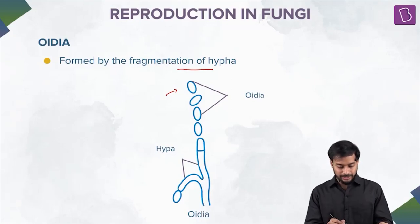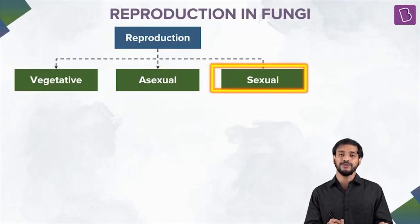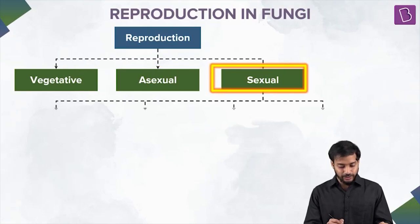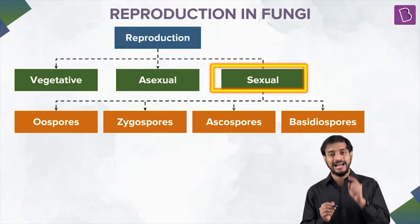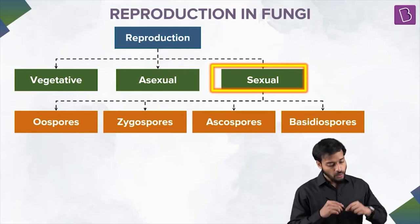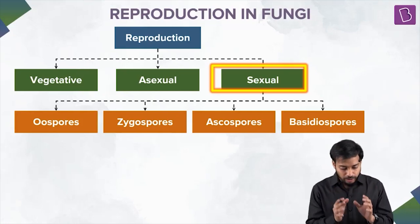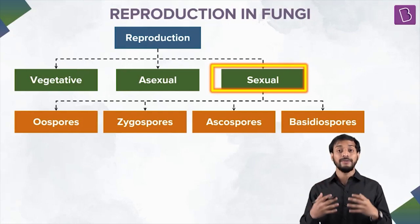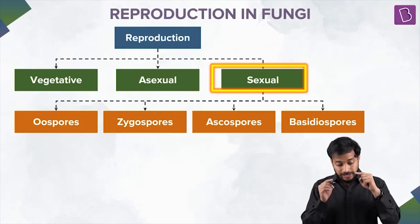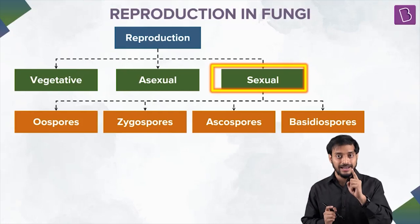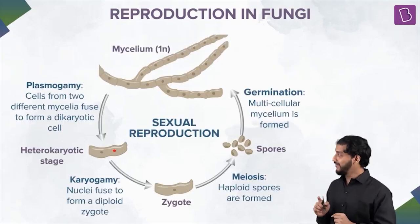Now, the sexual mode. Sexually, fungi produce these spores: oospores, zygospores, ascospores, and basidiospores. I won't discuss these individually in detail here — we'll cover them when talking about the classification of fungi, where you can relate to them. Sexual reproduction in fungi is really important, so now comes the interesting part.